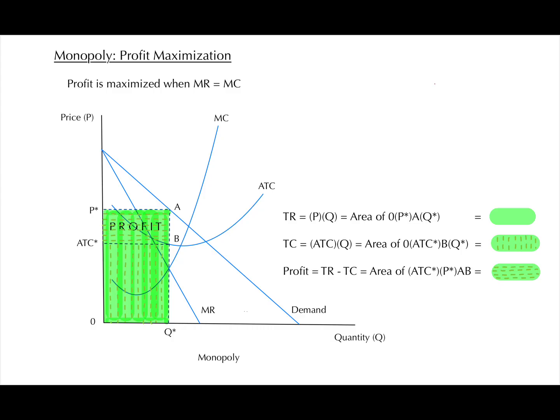In perfect competition, there are many producers who all sell an identical product. Thus, if a firm decides to sell at a higher price or a lower price, it will not affect the market and it will not maximize its profit. This makes the demand curve perfectly elastic, and thus horizontal.